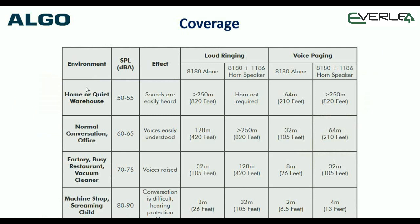The coverage of an 8180 - this table goes through various examples: home, natural normal conversation, factory, busy machine shop, etc. It gives you an idea of what coverage an 8180 will give. For example, in a quiet warehouse, a lone 8180 would cover 250 metres for alerting and 64 metres for voice paging. It just gives you a snapshot of what coverage you're going to get. This will entirely depend on the environment you're working in - this is a guideline only.